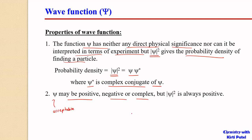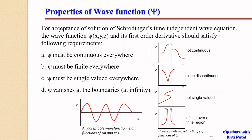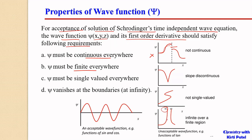For an acceptable ψ value — since there are unacceptable and acceptable ψ values for the Schrödinger wave equation — as a solution for the Schrödinger time-independent wave equation, we must have an acceptable ψ value. For acceptance of a solution, the wave function ψ and its first-order derivative should satisfy the following conditions: ψ must be continuous everywhere — not discontinuous. And it must be finite everywhere; if it goes to infinity, it is not an acceptable solution.